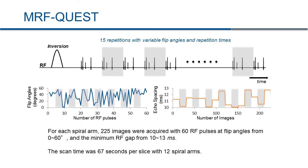To fully resolve the T1 and T2 maps, this 4-RF QUEST block was repeated 15 times after an inversion pulse. So for each spiral arm, we used 60 RF pulses to acquire 225 frames. The flip angle was randomly selected from 0 to 60 degrees, as shown by the blue curve on the left. The minimum RF gap was also varied from 10 to 30 milliseconds randomly. The scan time was 67 seconds per slice acquiring 12 spiral arms.